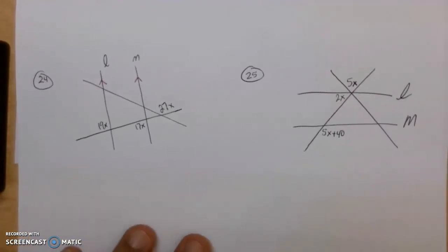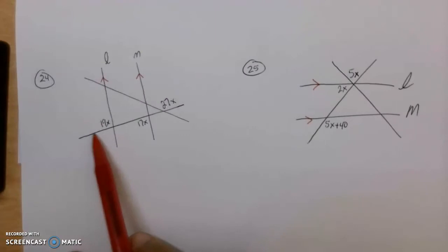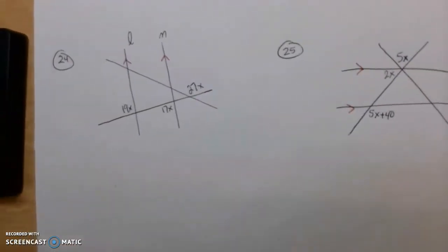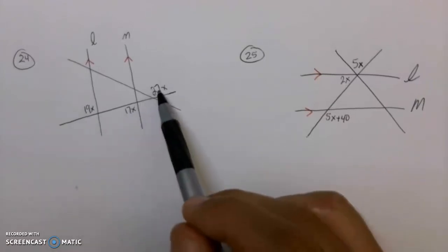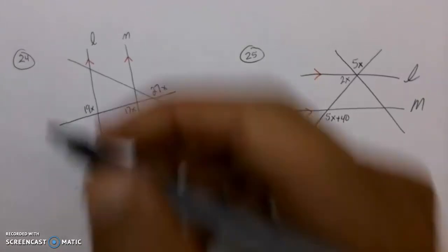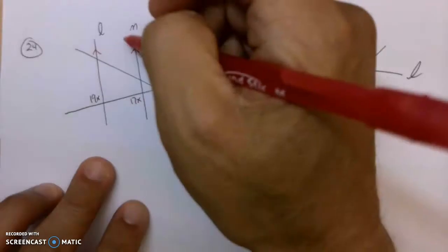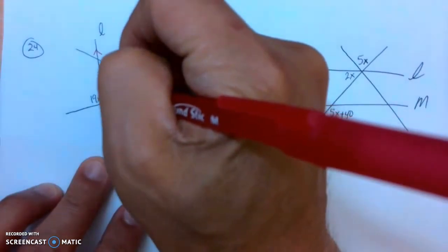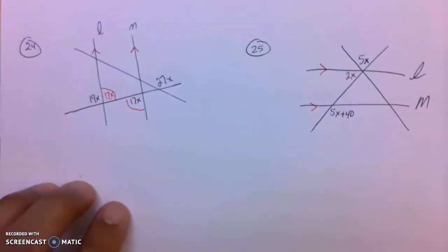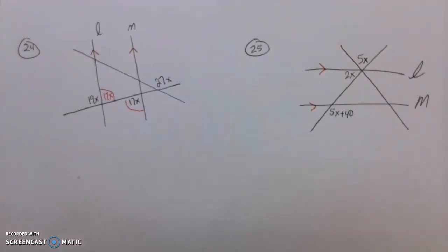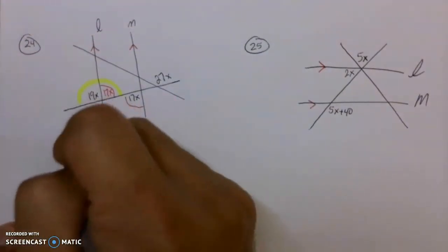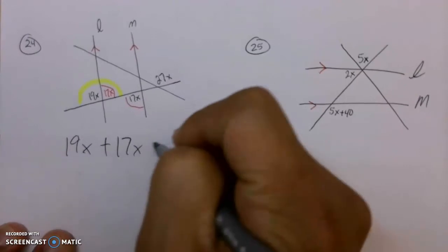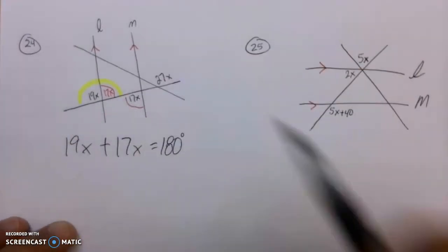I'm going to do number 24 and 25. They say L and M are parallel, and you're going to solve for X. All I'm going to do is just set up the correct equation here. In both of these problems, they're going to give you information that you don't need. You've got 19x, 17x, 27x — what do you do with this? Here are the lines that are parallel, and because those lines are parallel, 17 here is the same as 17 here — 17x — because those are alternate interior angles. And together, this 19 and the 17 add up to 180. That's the equation: 19x plus 17x equals 180, because they make a straight line.